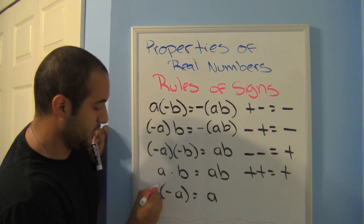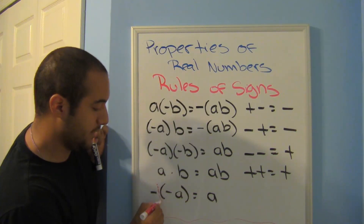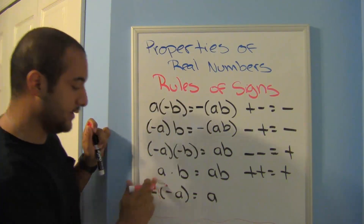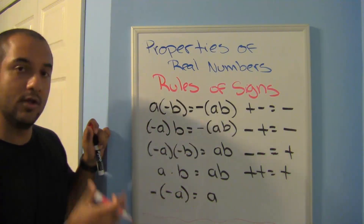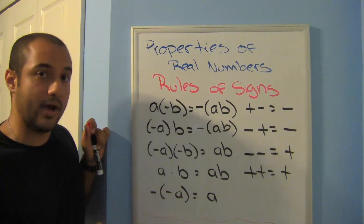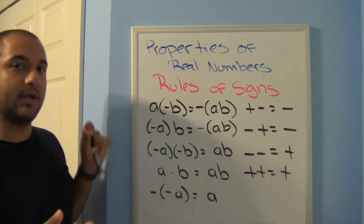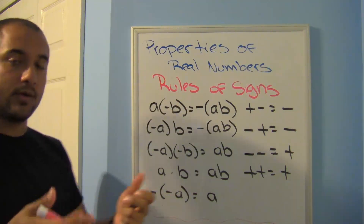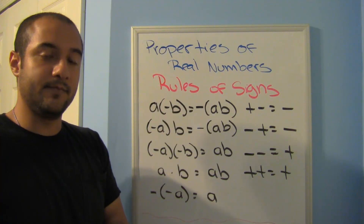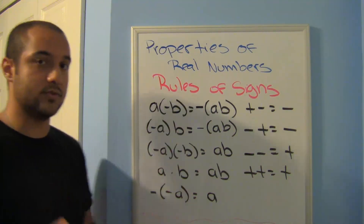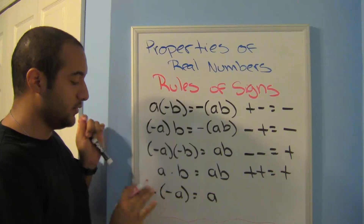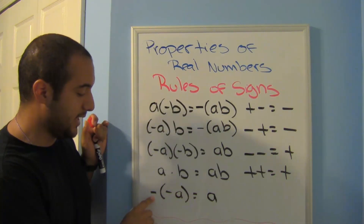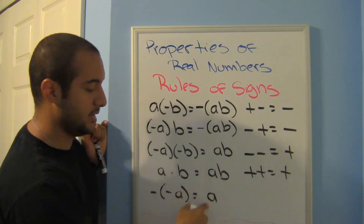You can write imaginary ones in front of negative numbers to make the rules clearer, but try to wean off that over time — it's like training wheels. Once you get used to knowing there's a one there, you don't need to write it. A negative times a negative, just like before, gives a positive.